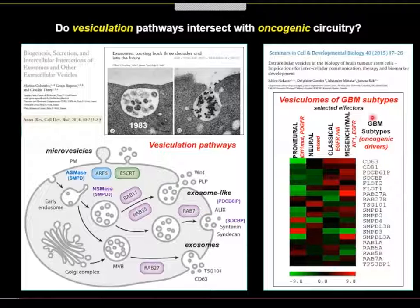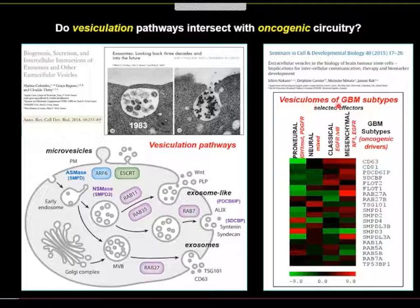The question is whether levels of these molecules are common between cancer cells and normal cells, or whether they reflect the oncogenic status of tumor cells. Analysis of glioblastoma subtypes — mesenchymal, classical, neural, and proneural — shows dramatically different levels. For example, mesenchymal glioblastoma has the highest level of RAP27A regulator, while proneural glioblastoma expresses neutral sphingomyelinase at much higher levels than other subtypes. Oncogenic pathways intersect with the circuitry responsible for vesiculation.